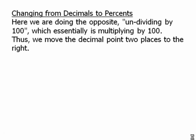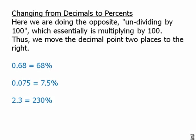Changing from decimals to percents. Here we're doing the opposite — undividing by one hundred — which is essentially multiplying by a hundred. Thus, we move the decimal point two places to the right. We have several decimals here. Notice that the final one: if we have a decimal greater than one, it becomes a percent greater than one hundred percent.